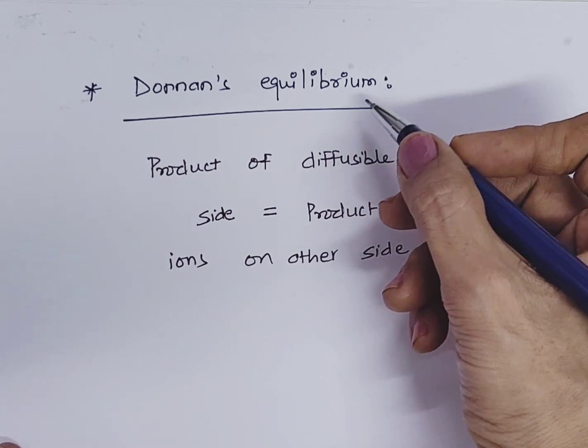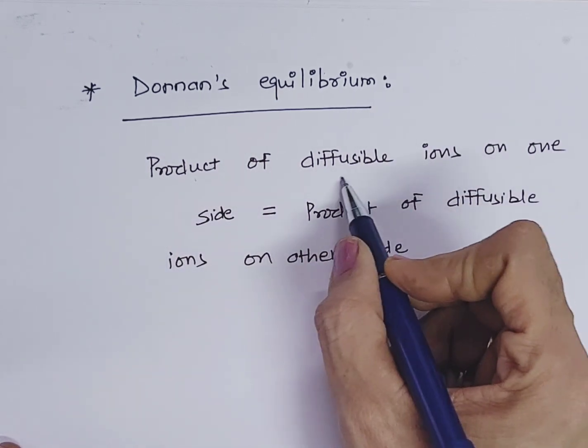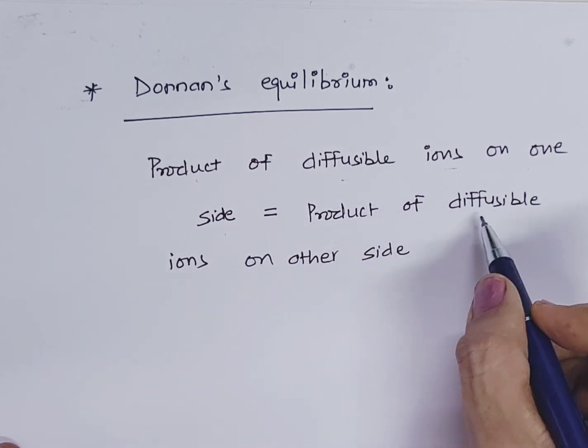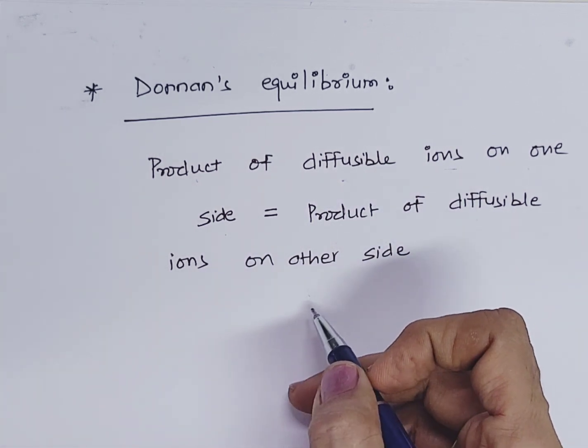What is Donnan's equilibrium? It denotes that the product of diffusible ions on one side of the membrane is equal to the product of diffusible ions on the other side. This is the equilibrium.